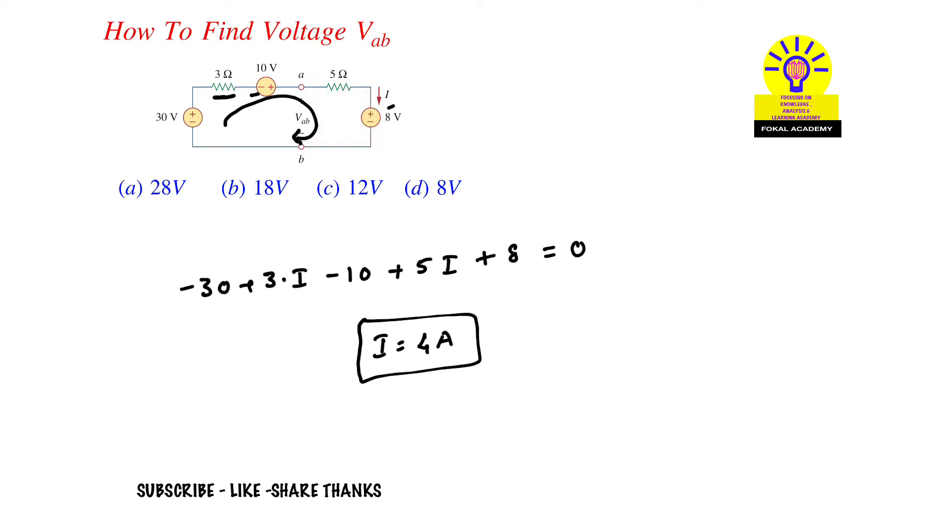Then in this loop, current is like this. Now here minus is there, so from minus to plus current was entering. That's why I'm taking minus V_AB and plus 5 into current, plus 8.